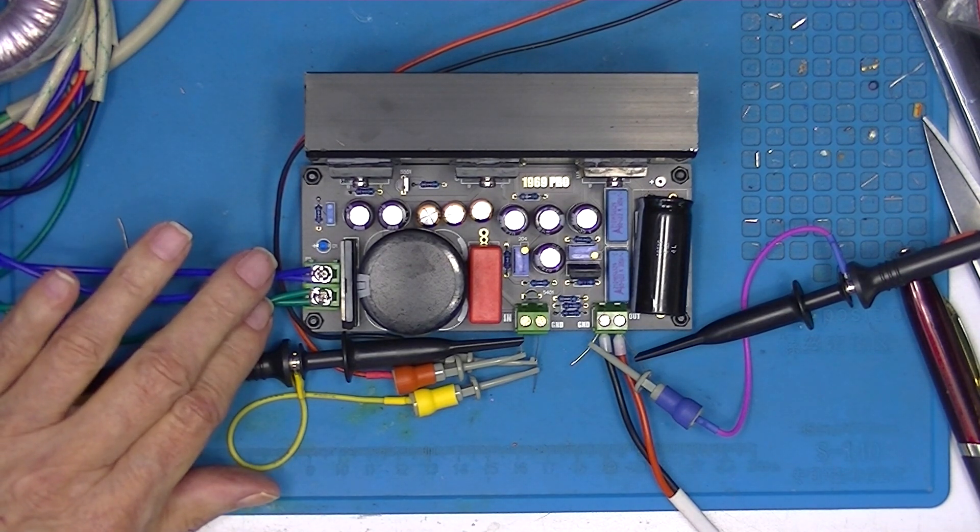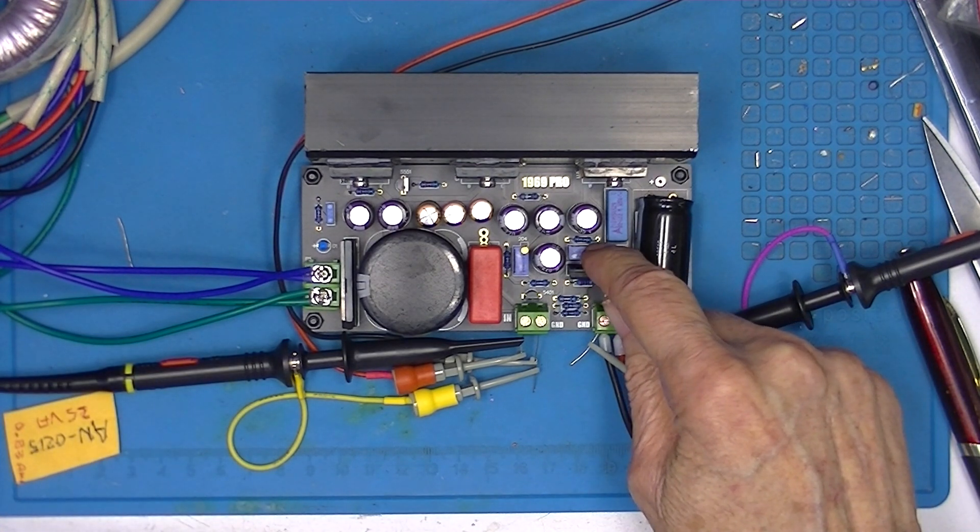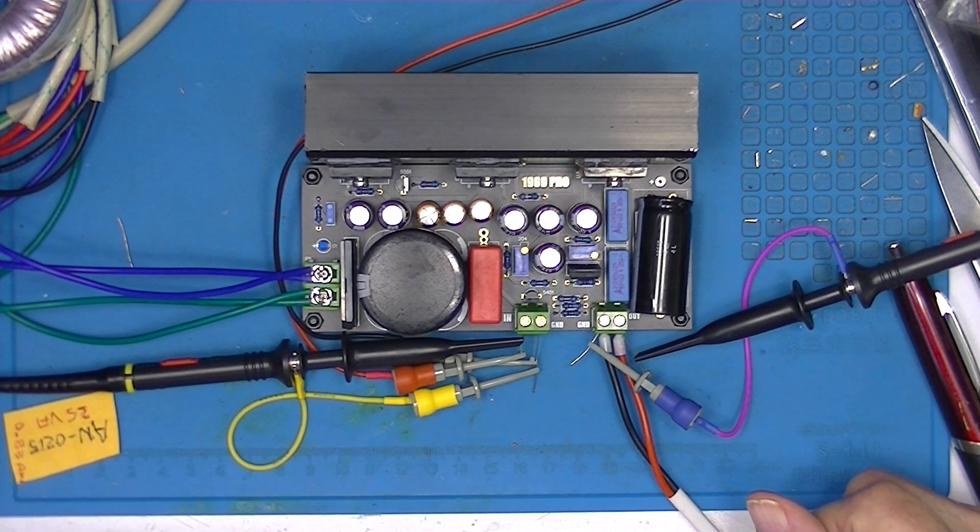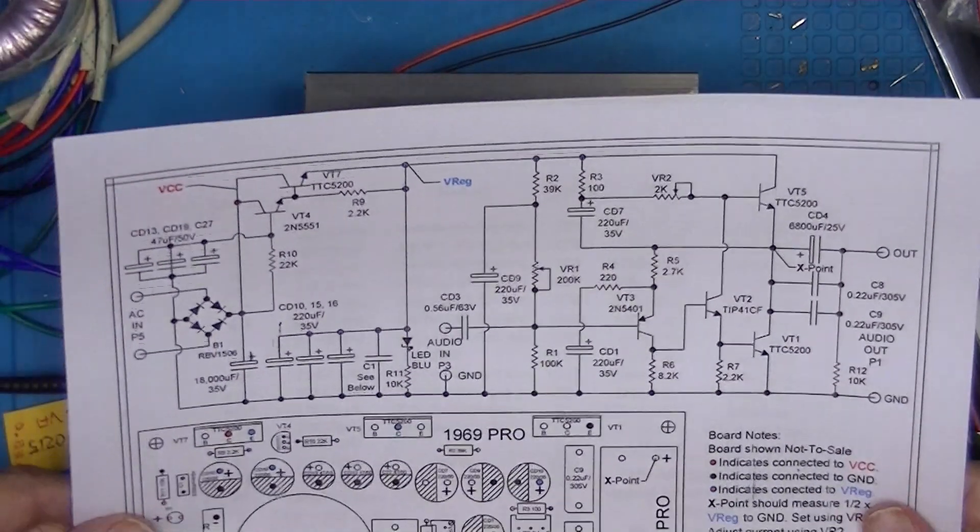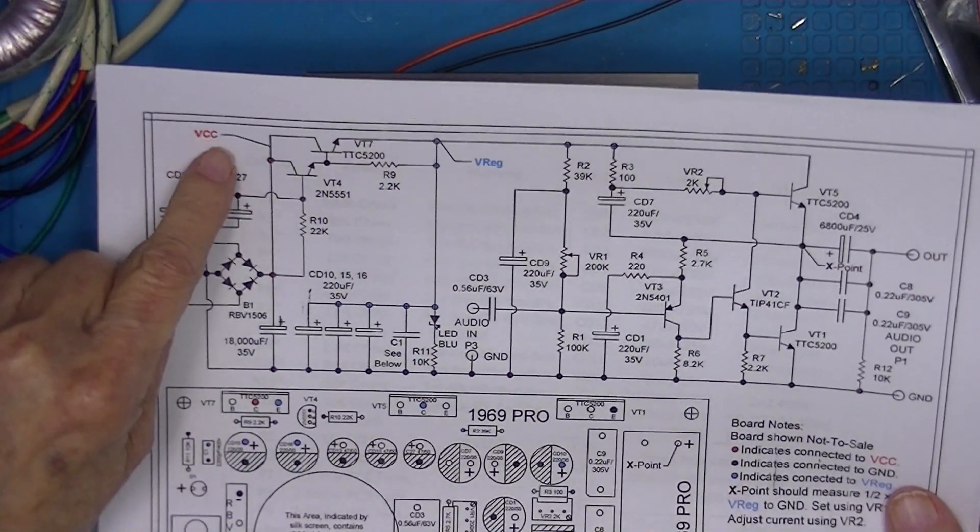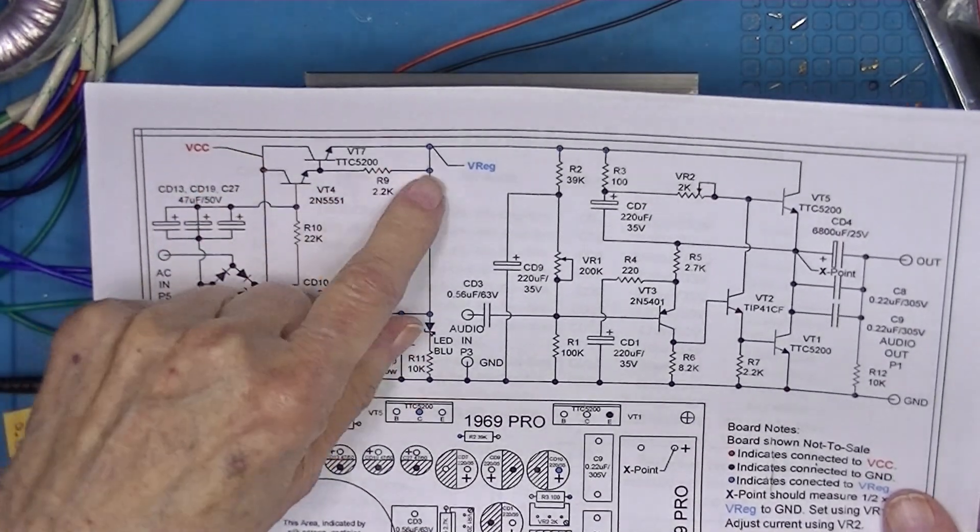volts DC and adjusted the current to 1 amp. So first of all, let's plug it in and measure VCC and VREG.